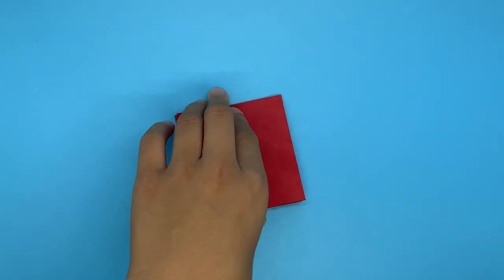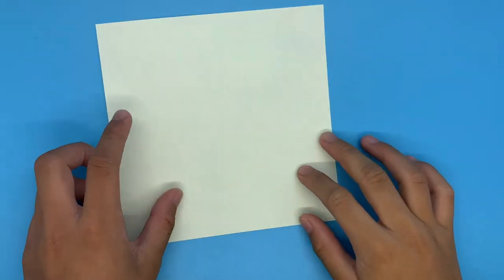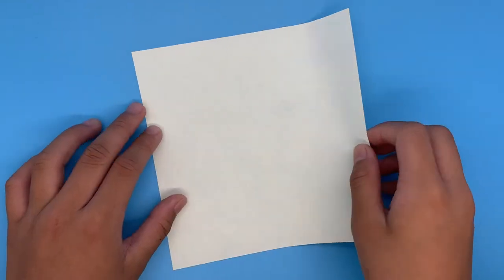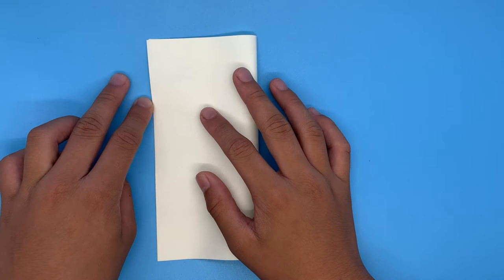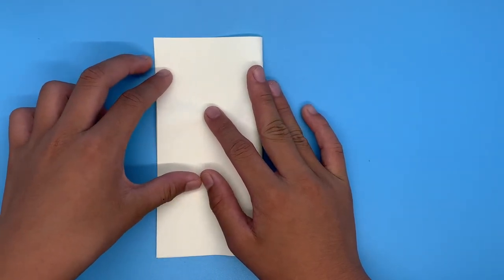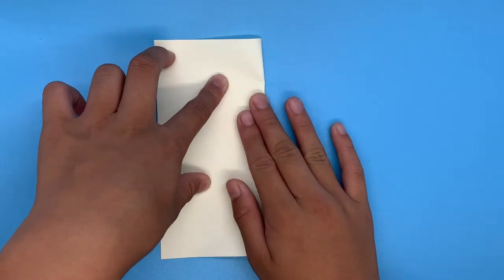So let's get our papers and start folding. I'm going to use a white sheet of paper and I'm going to fold it left to right, or right to left, doesn't really matter, just fold it in half.